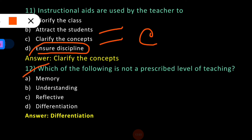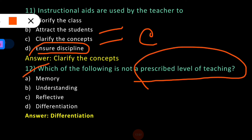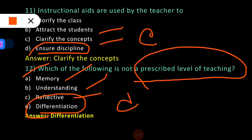The last question: Which of the following is not a prescribed level of teaching? There are three kinds of levels of teaching: (1) memory level of teaching, (2) understanding level of teaching, and (3) reflective level of teaching. Differentiation is not part of the levels of teaching, so option D is the correct answer. Differentiation is not a prescribed level of teaching. We have already discussed in detail the levels of teaching, Bloom's taxonomy, and the different parts of the levels of teaching in previous sessions.